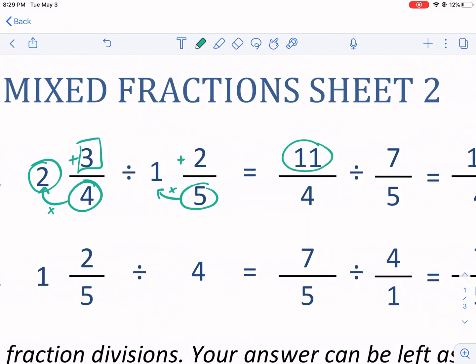That's four times two. Let me get my pointer out. Four times two plus three is 11. Five times one is five plus two is seven. And you keep it over the denominator that's already there. So that's the first part, just converting.